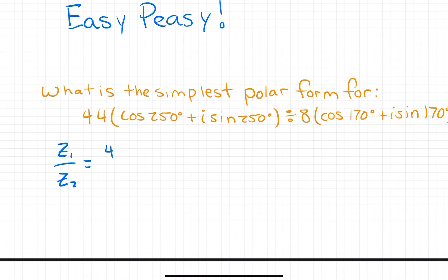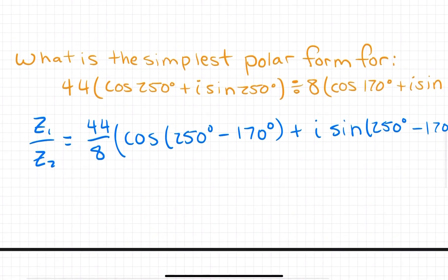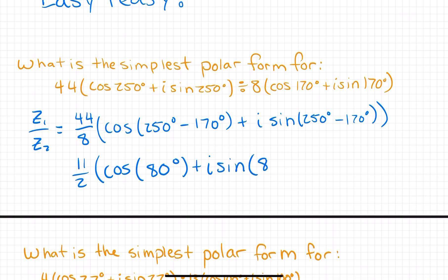This is going to look like 44 over 8, times cosine (250 degrees minus 170 degrees), plus i times sine (250 degrees minus 170 degrees). Simplifying: 44 over 8 reduces to 11 over 2, and 250 minus 170 gives 80 degrees. So the answer is 11/2 times cosine 80 degrees plus i sine 80 degrees. That's the simplest form.